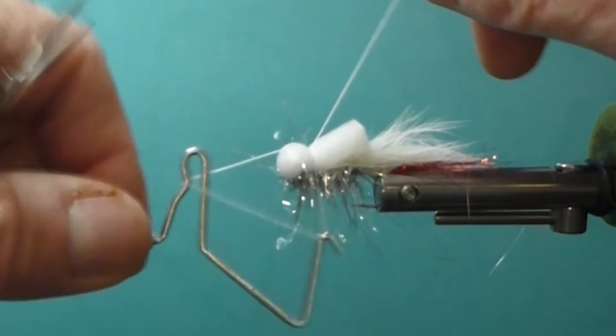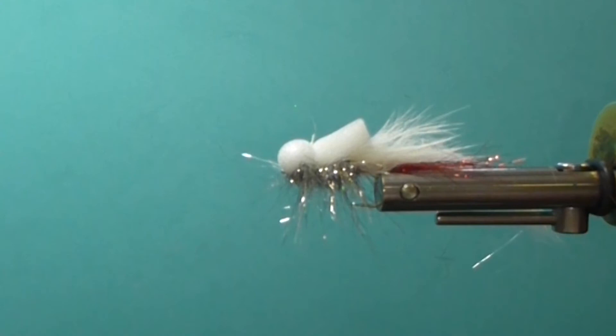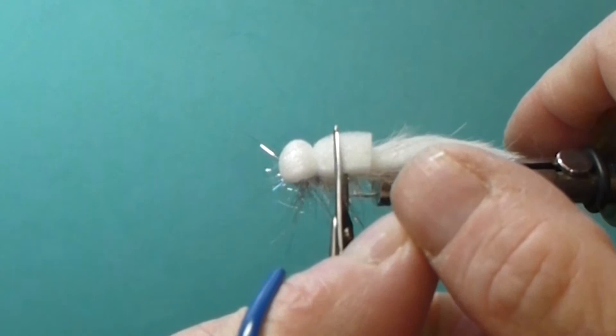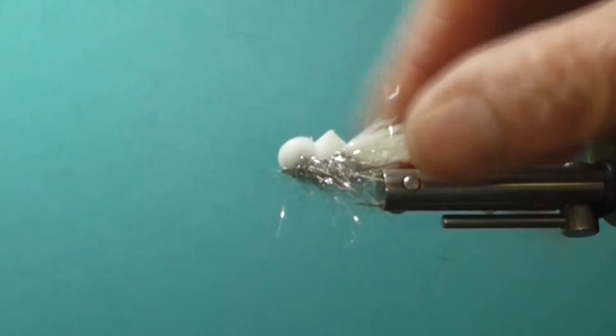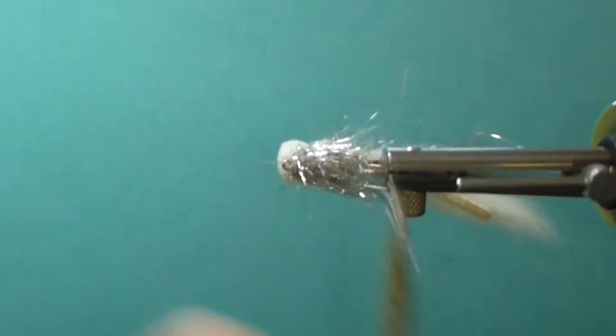And then with the top here I'll just trim my balloon head back a little bit, then we come in here and just comb our dubbing back, so it lays back a little bit in the water. I like it to flow a little bit.